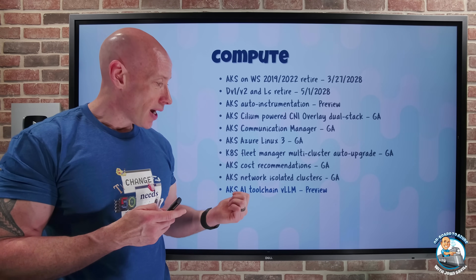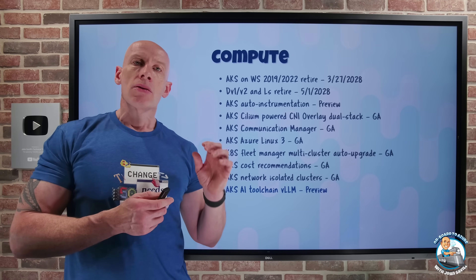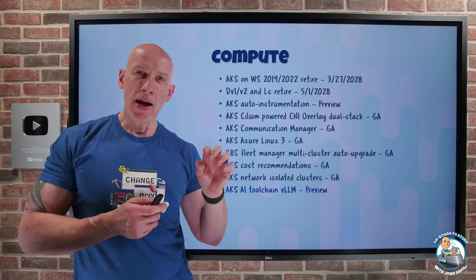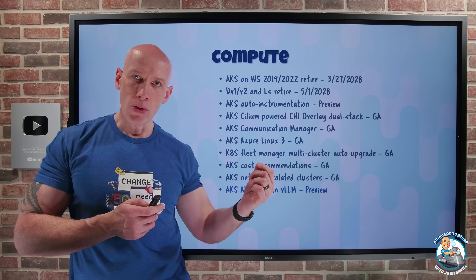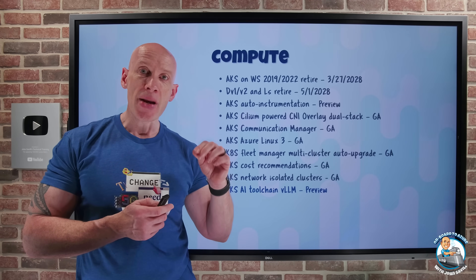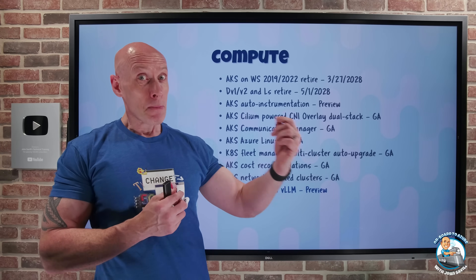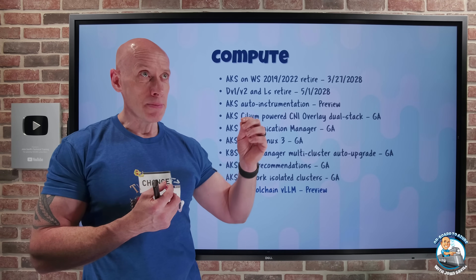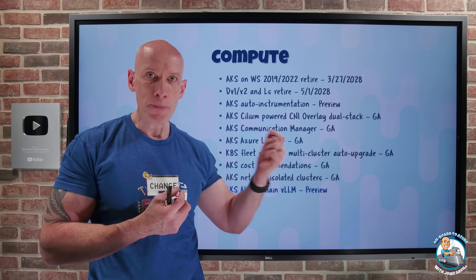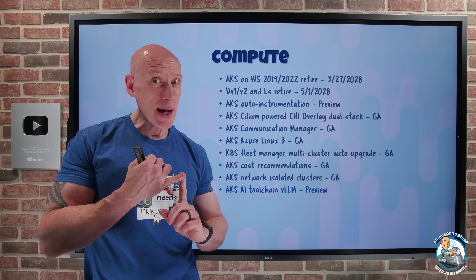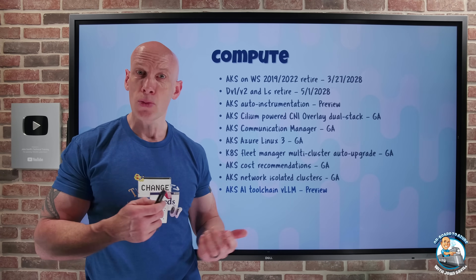AKS AI Tool Chain now uses VLLM in preview. The AI Tool Chain Operator add-on, when you want model inferencing workloads, will now use the VLLM serving engine. This is really good for speed — as requests come in it's much more performant than the previous engine. You can use it for OpenAI-compatible APIs, DeepSeek R1 models, and various Hugging Face models as well.